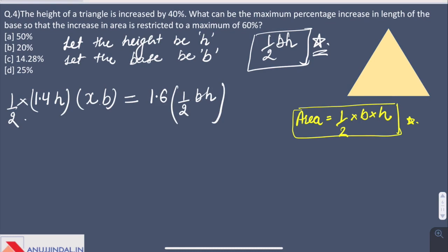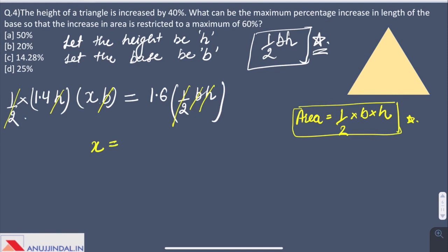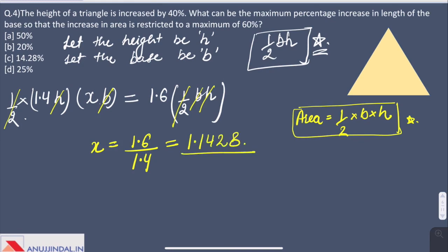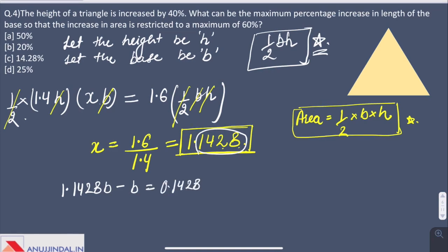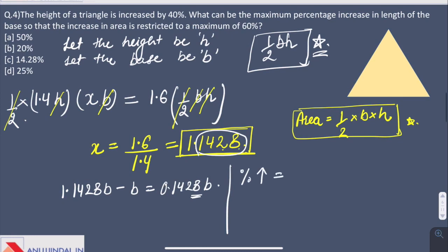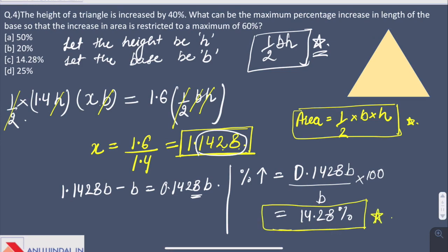To simplify the equation we will cancel out the variables. Here we get X equals 1.6 divided by 1.4 which is 1.1428. So the base becomes 1.1428 times. To find the increment, 1.1428B minus B equals 0.1428B. To find the percentage increase, 0.1428B upon B multiplied by 100 which comes out to be 14.28%. So this is the maximum increment that could be done in the base. The answer is C, 14.28%.